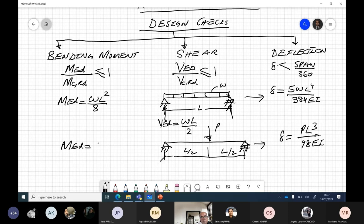M_ED in this case will be equal to PL over 4. V_ED, applied shear, will be equal to the load itself divided by 2. P is design load and small w is design load.